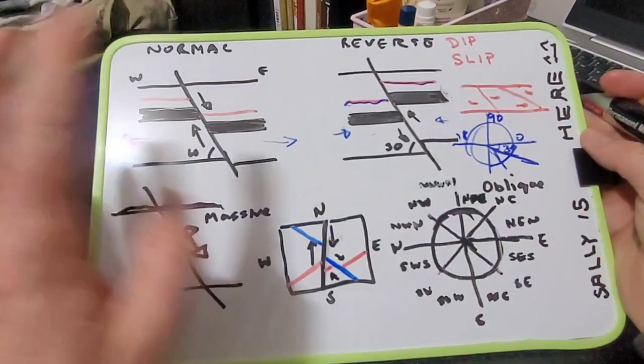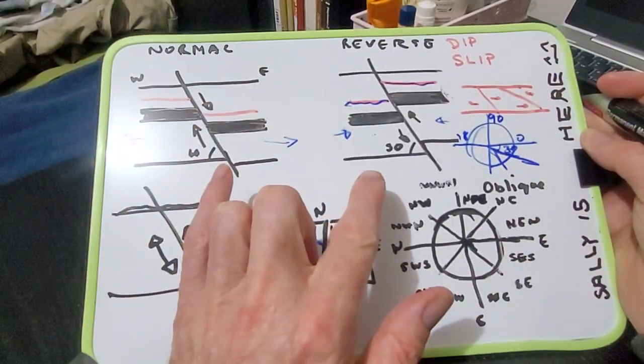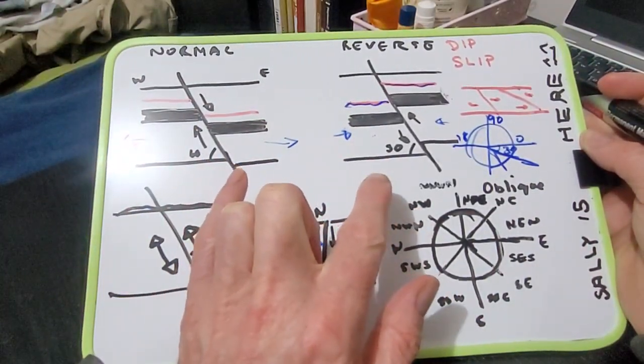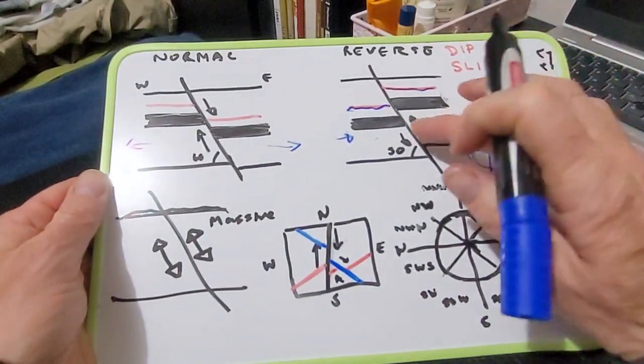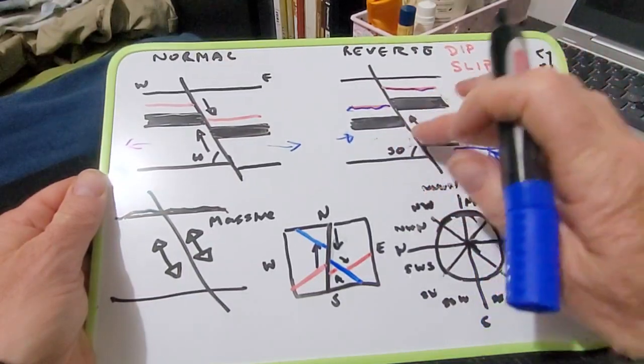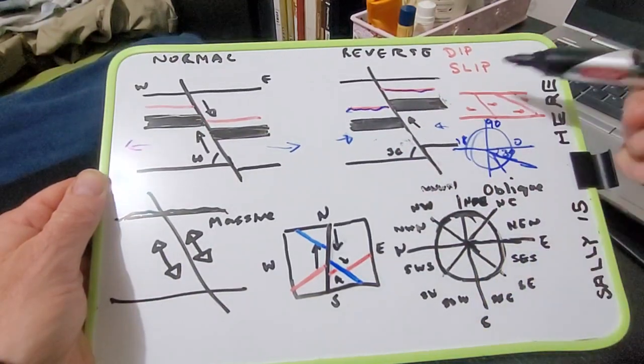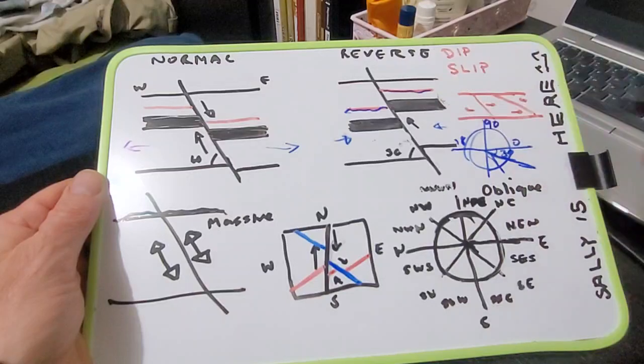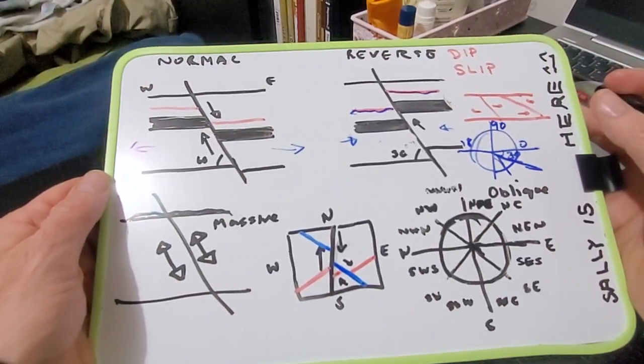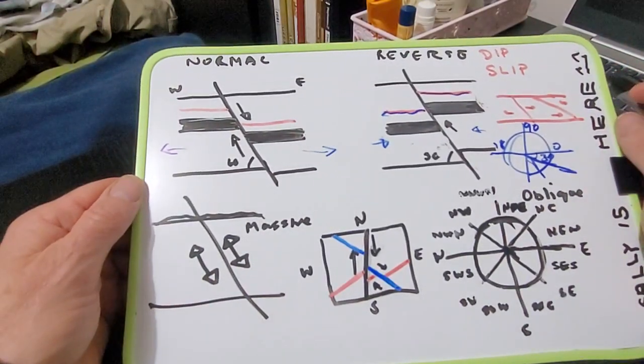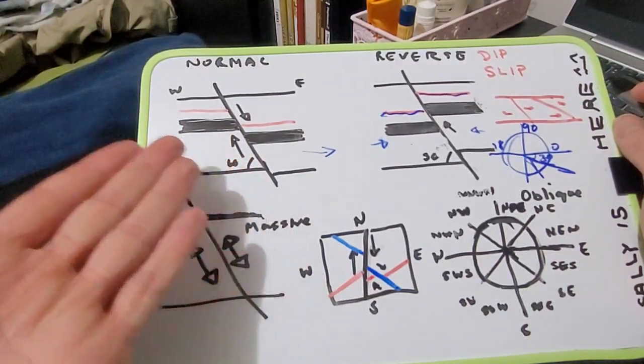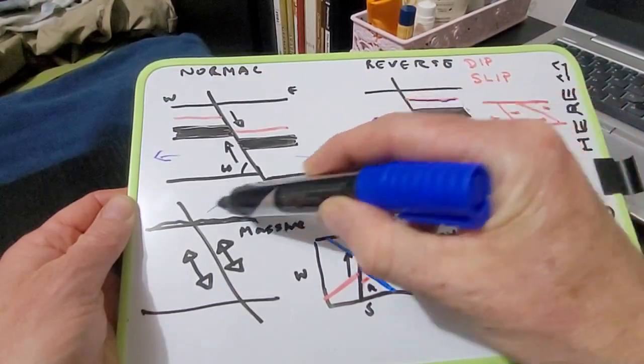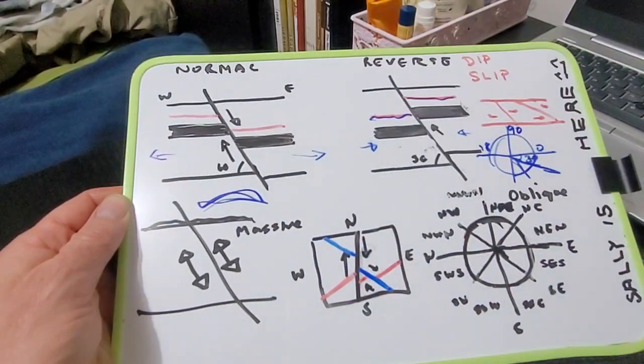So in these two cases, it doesn't mean that both of these sides have moved down. It just means that one side has moved relative to another. So it could be that this side is not moving at all. And it's just this side's been pushed on top of the foot wall. Same with this one. It might be that one side is stable.